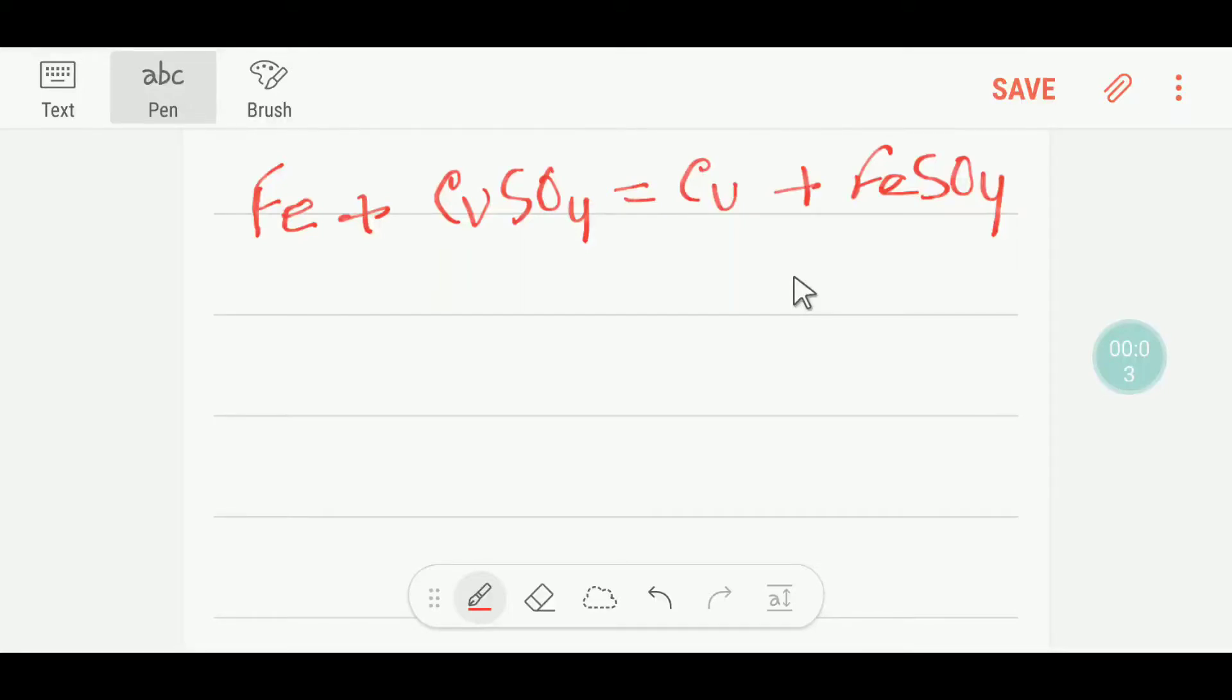Welcome to Chemistry Tutorial 360. Today we are going to balance this reaction. This is iron, this is copper sulfate, this is copper, and this is ferrous sulfate or iron(II) sulfate. Here the oxidation state of iron is 2+.